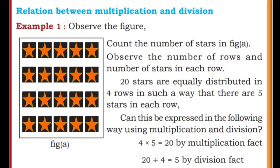Observe the figure. Count the number of stars in figure A. Observe the number of rows and number of stars in each row. 20 stars are equally distributed in 4 rows in such a way that there are 5 stars in each row. Can this be expressed using multiplication and division? So 4 into 5 is equal to 20 by multiplication fact. 20 divided by 4 is equal to 5 by division fact.